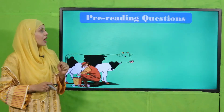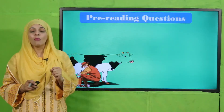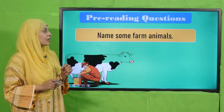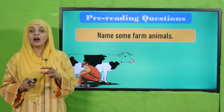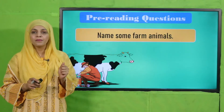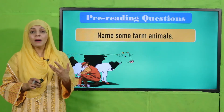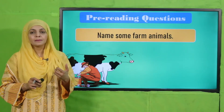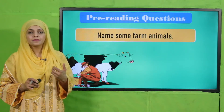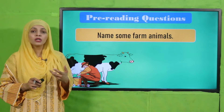Now let's quickly move forward towards the pre-reading question. Quickly tell me, name some farm animals — horses, cows, and others. Very good.